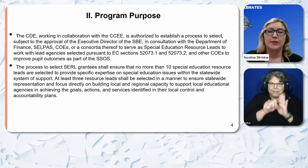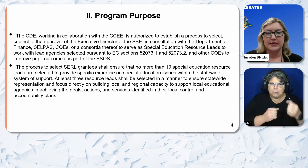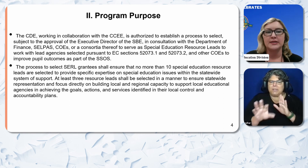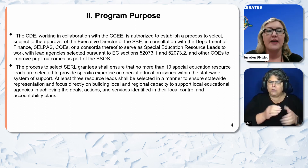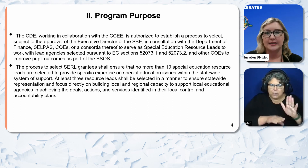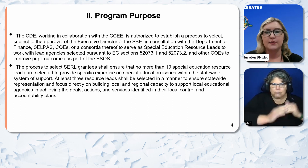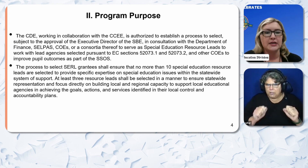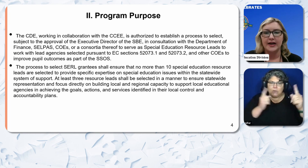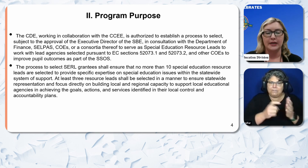At least three resource leads shall be selected in a manner to ensure statewide representation and focus directly on building local and regional capacity to support local educational agencies in achieving the goals, actions, and services identified in their local control and accountability plan.